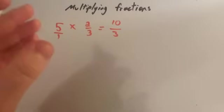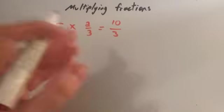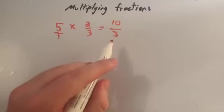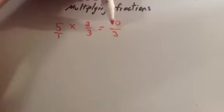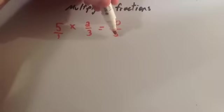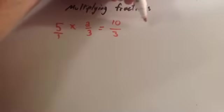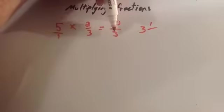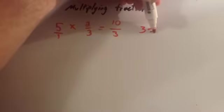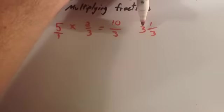Now, this is a top-heavy fraction, so we want to change it into a mixed number. Remember to watch that video if you don't know how to do that. The line means divide, so you see how many threes go into ten. Well, three threes go into ten with a remainder of one. And the number we were dividing by is three, so it stays in the denominator. So the answer is three and one-third.